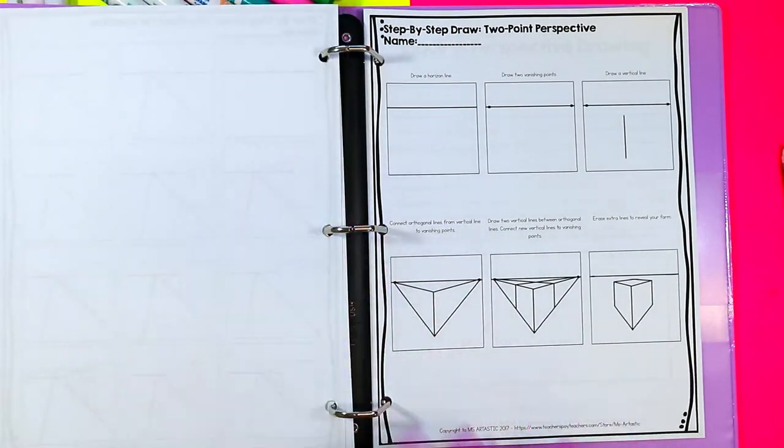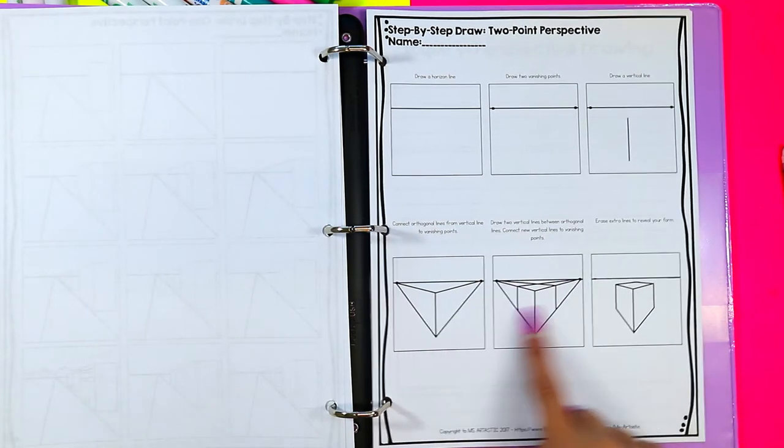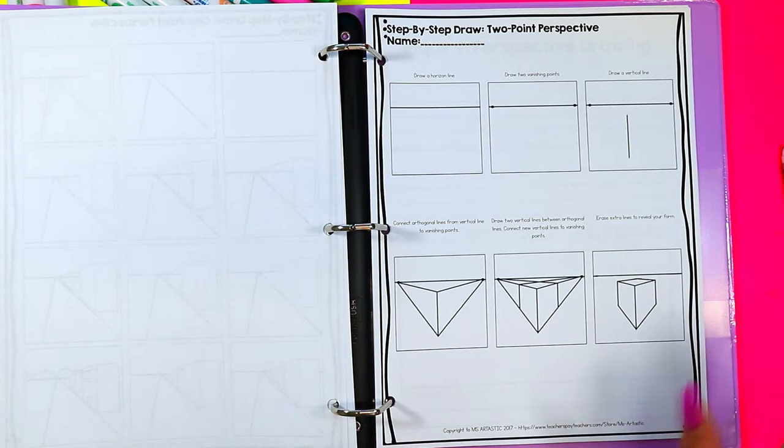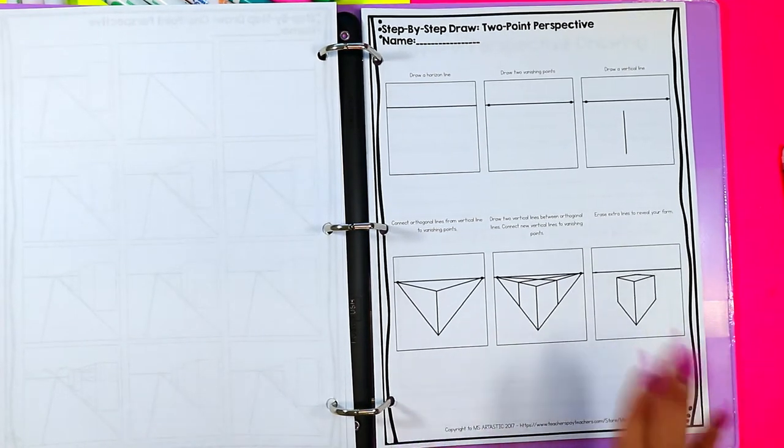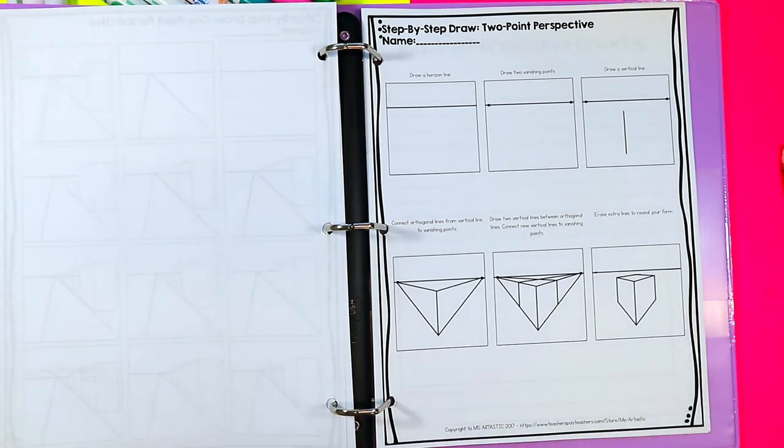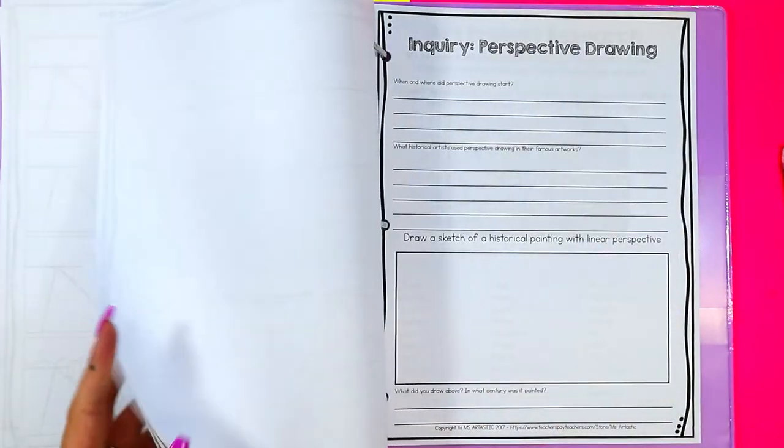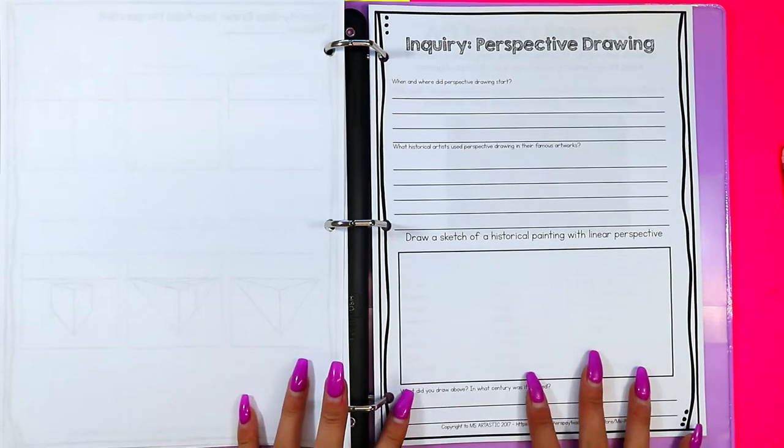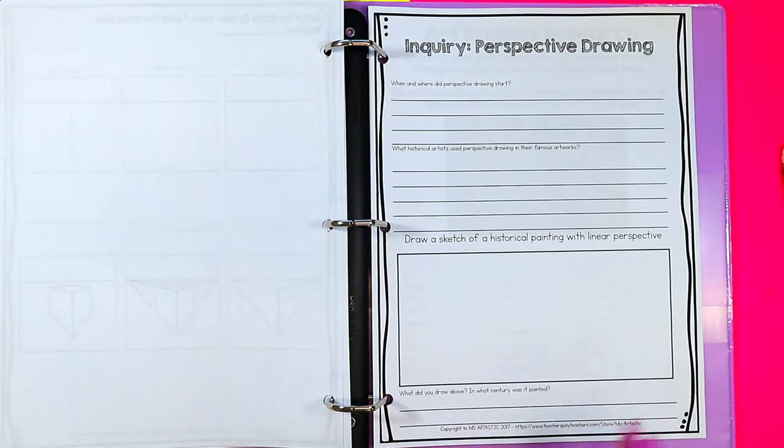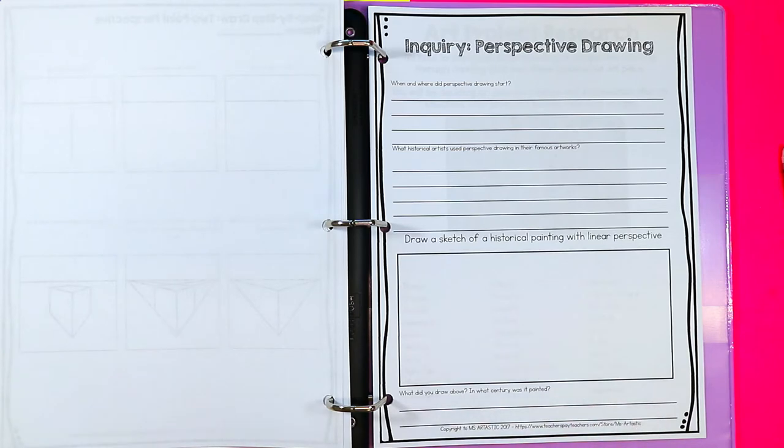It also gives a two point perspective landscape step by step as well. All included. Again, it also comes with a blank page for them to create on or you can use it on your choice of art paper in your sketchbook wherever you would like. It also provides different handouts. Again, this is just a sample of some of the pages that are included.